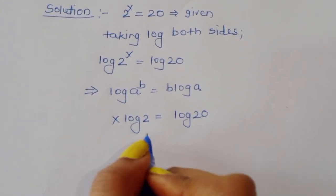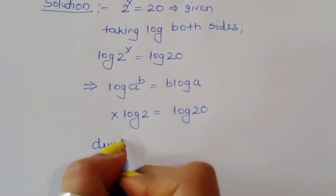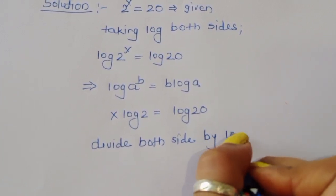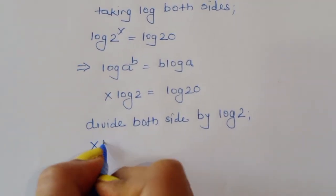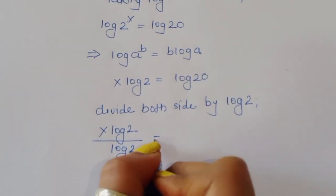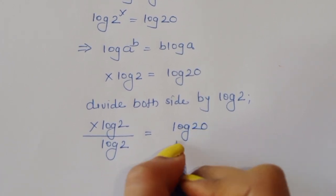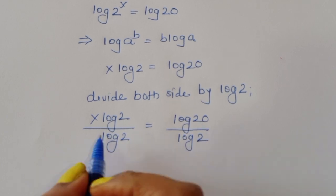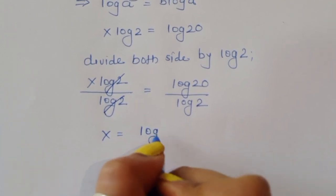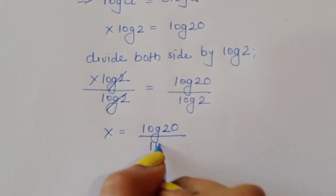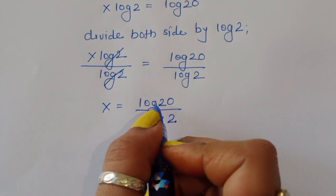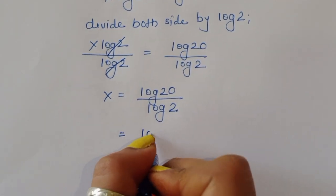Now we have to cancel log 2, so we divide both sides by log 2. Then x times log 2 divided by log 2 is equal to log 20 divided by log 2. Log 2 cancels, so x is equal to log 20 divided by log 2.